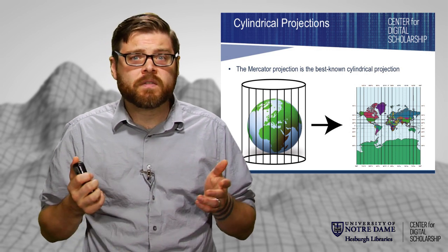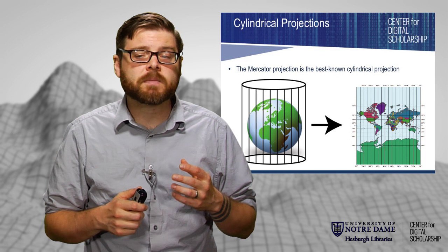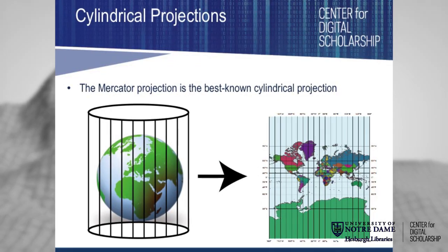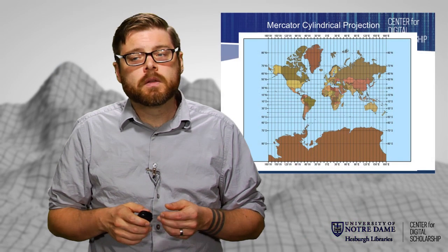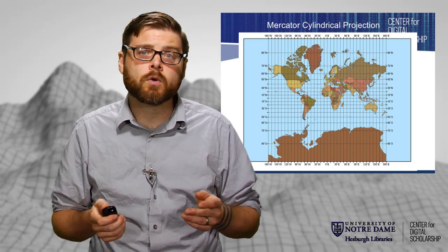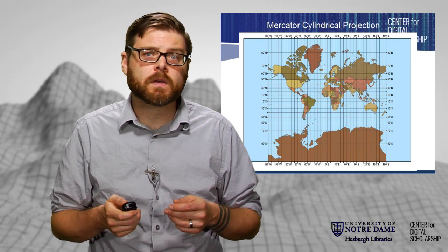A cylindrical projection is one of the earliest and most common. These are often called Mercator projections. Everything is very accurate at the equator, and it gets bigger or smaller as you get farther away — resulting in much larger geographies than they really are. This is why Greenland appears enormous and Antarctica looks larger than every other continent put together. This Mercator cylindrical projection is actually the one used in Google Earth and Google Maps, making it very common in web mapping.